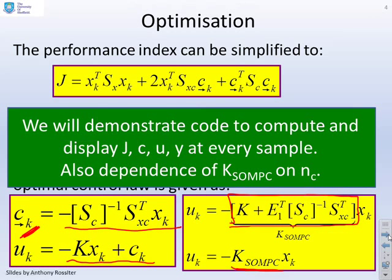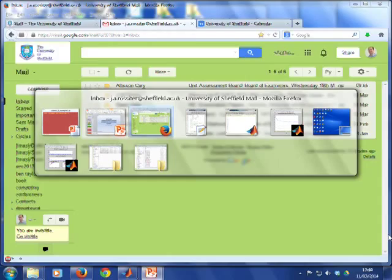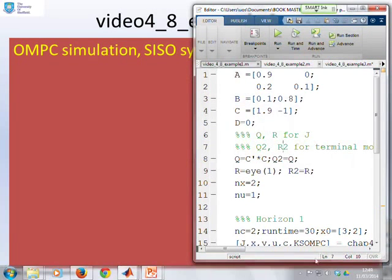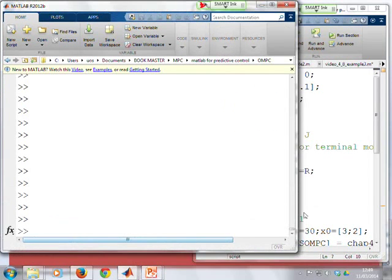What we want to do is demonstrate some code which computes and utilises this compensator and look at it for different NC. First then, let's start with video 4.8, example 1. So we open up our MATLAB as normal.